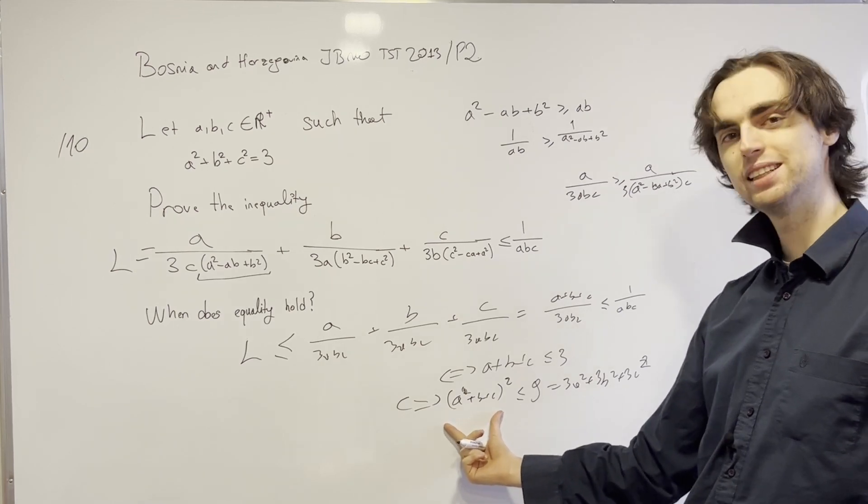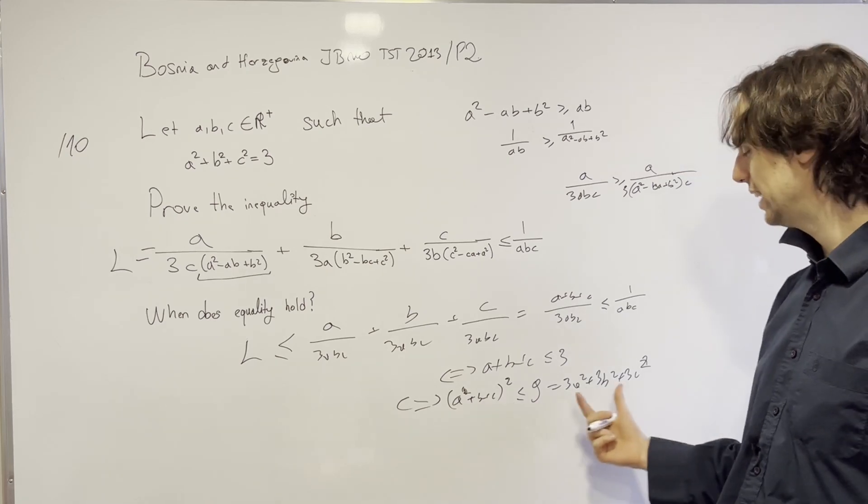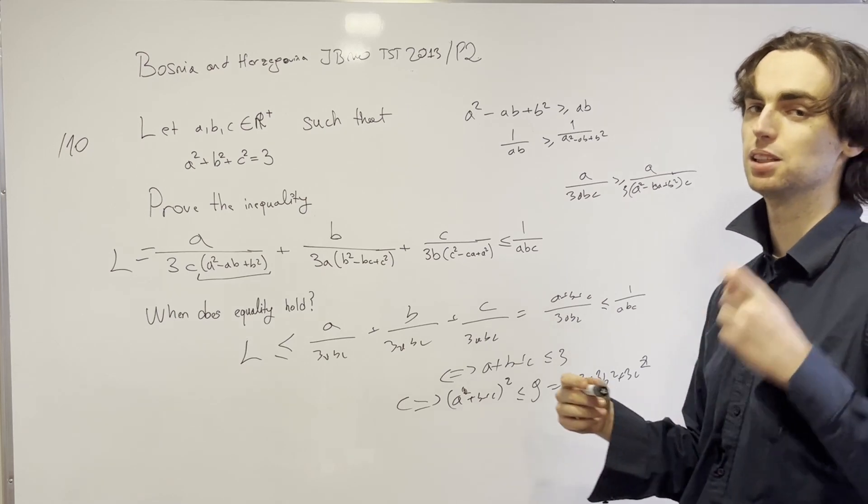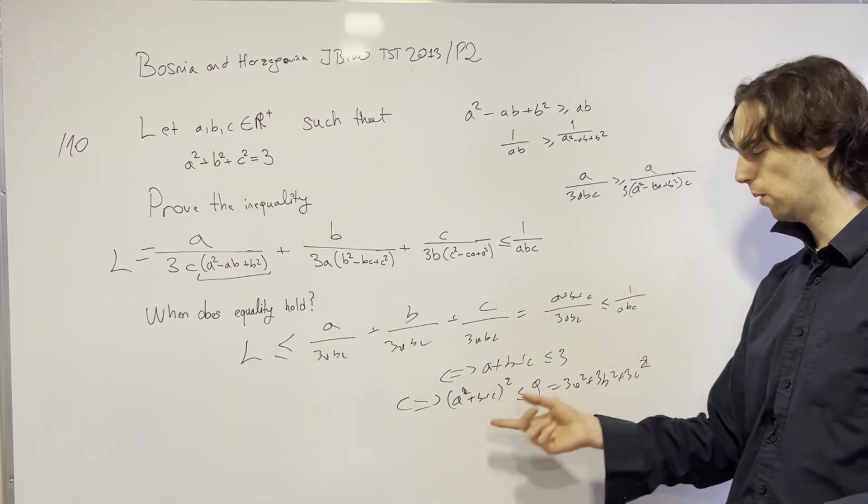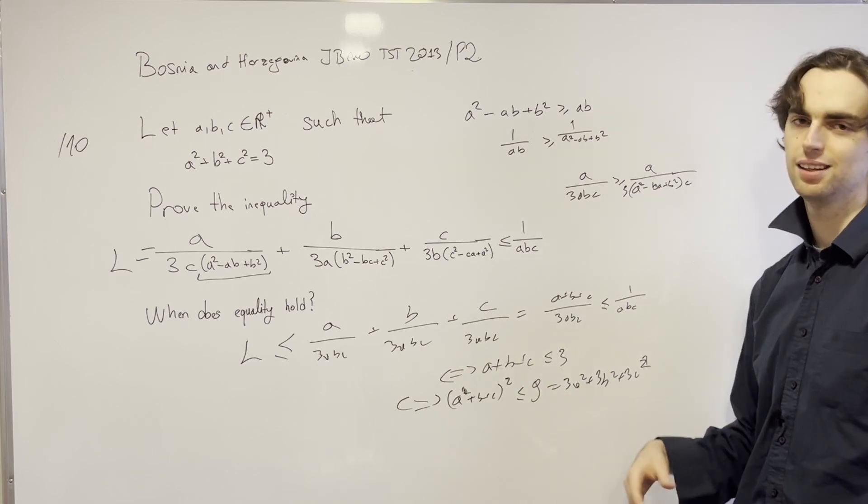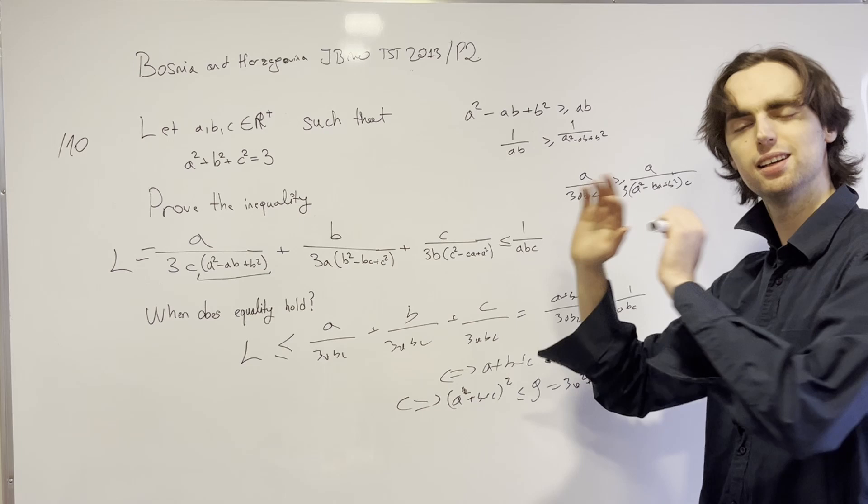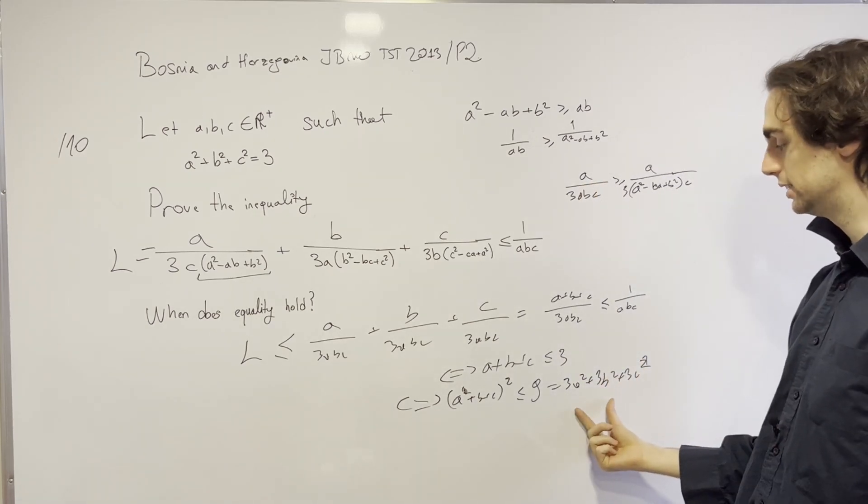And if you've done enough inequalities, you know that this quickly rewrites as (a-b)² + (b-c)² + (c-a)² is greater than or equal to 0. When you get rid of the square and you move everything on this side, it rewrites as (a-b)² plus that is greater than or equal to 0. And this then proves the inequality.